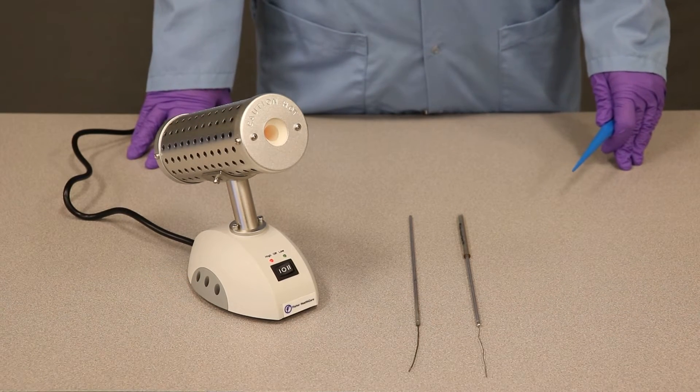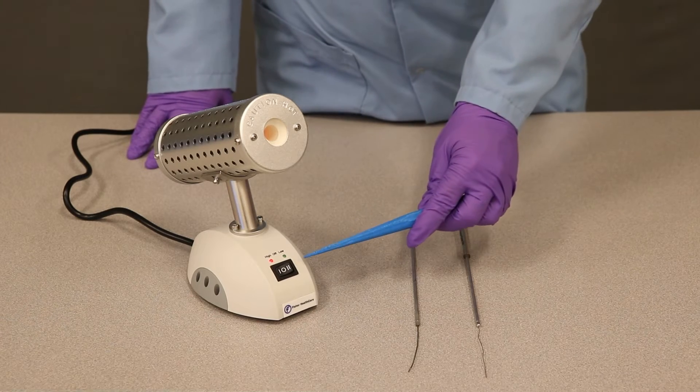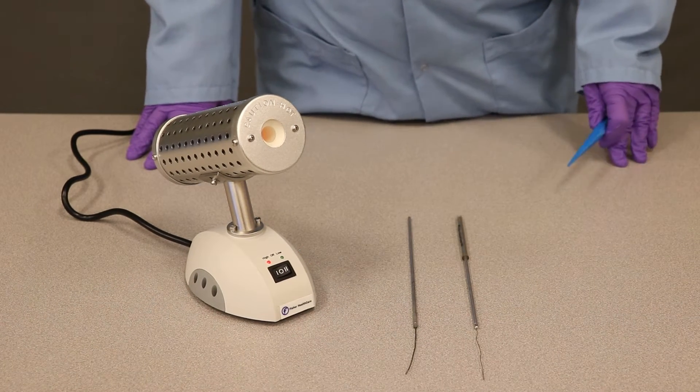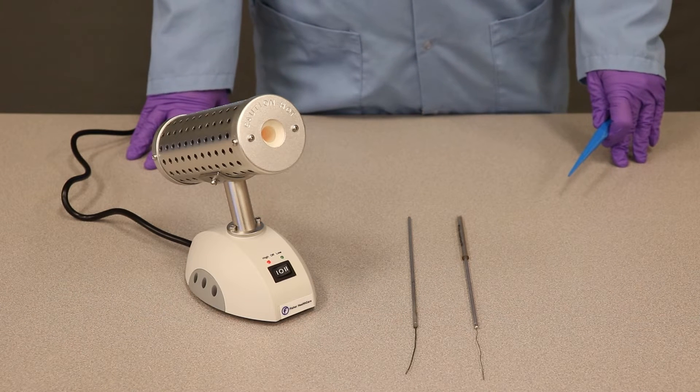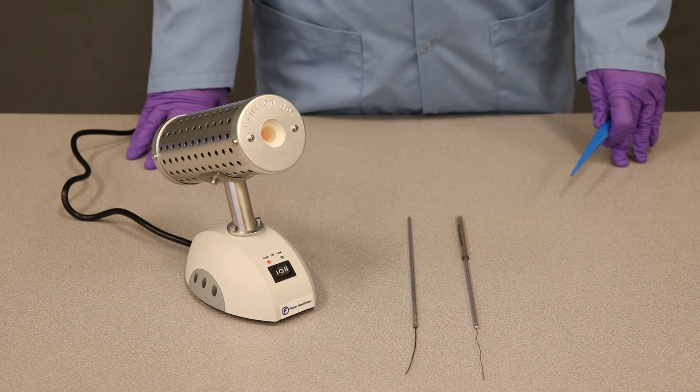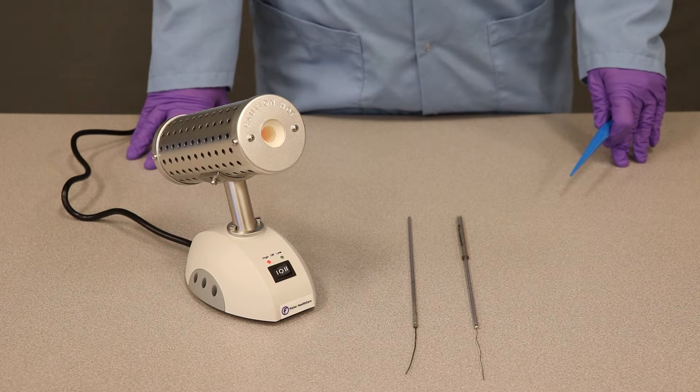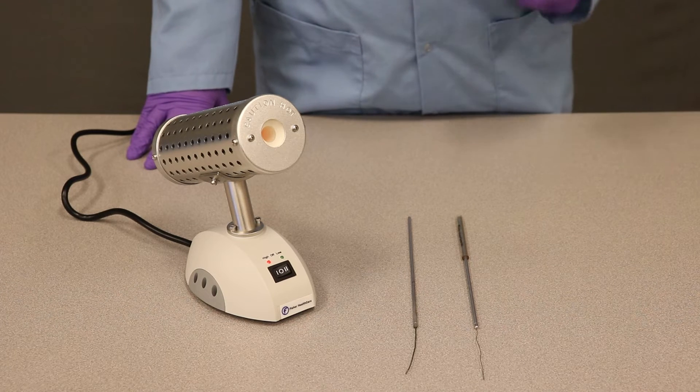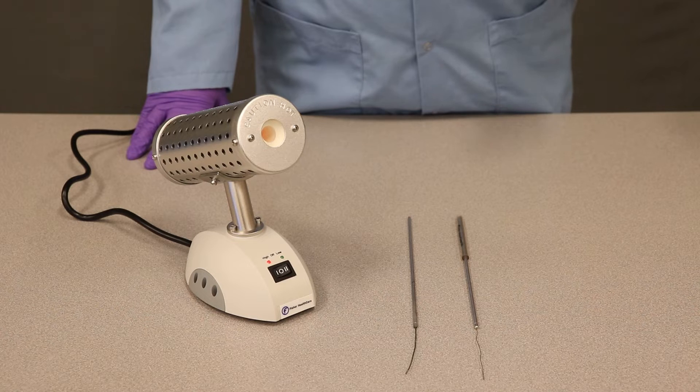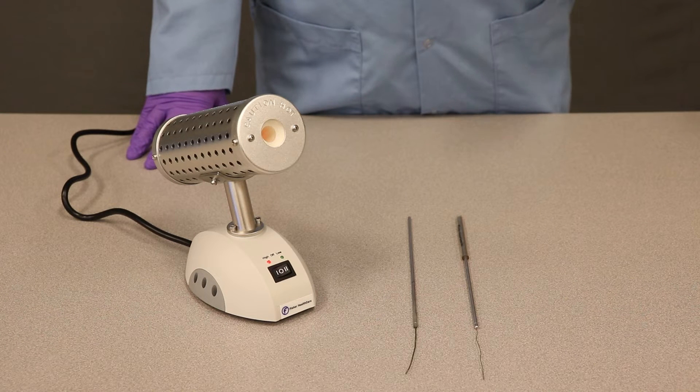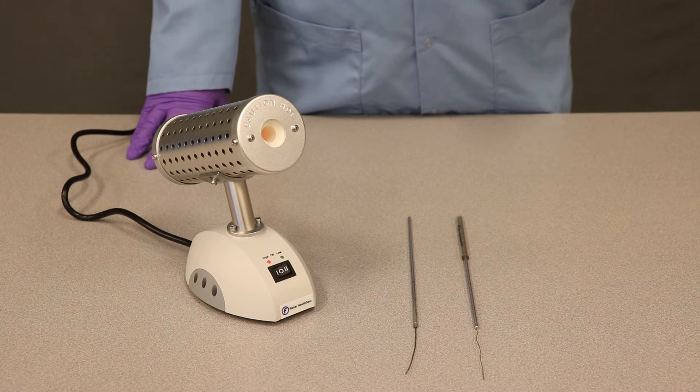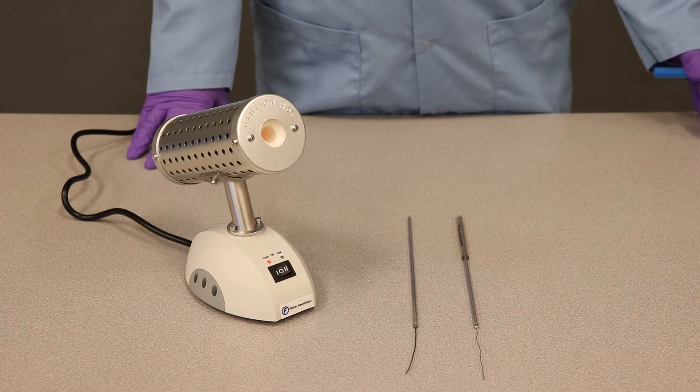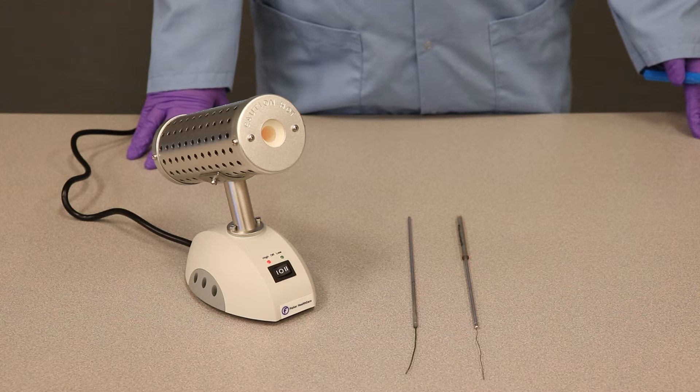The first step in using a Bact incinerator is turning it on. Here you can see that we already turned it on. You'll want to turn it on about 10 to 20 minutes before you need to use it because it requires time to heat up to the proper temperature for sterilization. Once it's heated up, you can leave the Bact incinerator on for hours on end, but you only want to keep it on for as long as you're using it because extended time on can wear out the heating mantle.